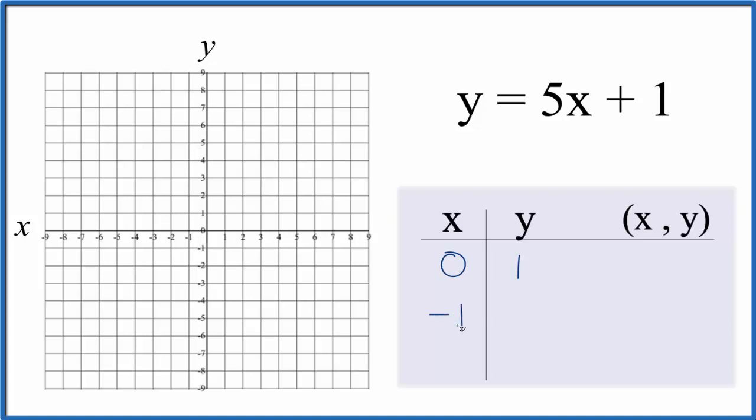Then how about negative 1? 5 times negative 1, that's negative 5 plus 1, that gives us negative 4.